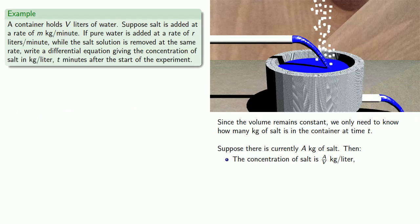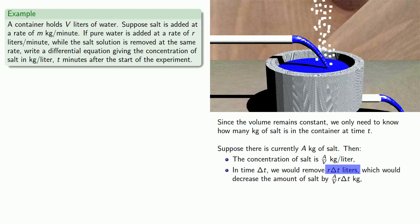In time delta t, we'd remove r delta t liters. And this would decrease the amount of salt by A over V times r delta t kilograms. That's the volume of solution that we've removed times the concentration of the solution.